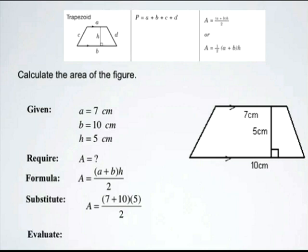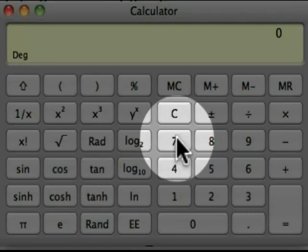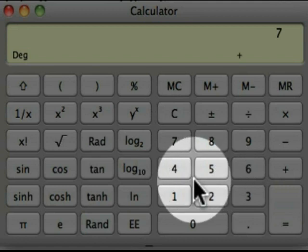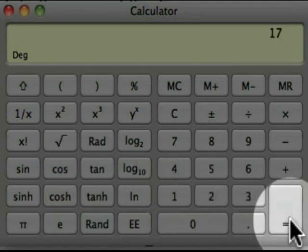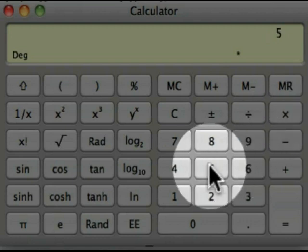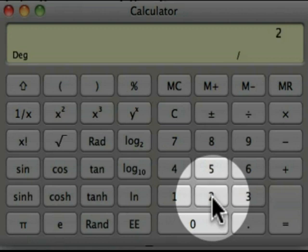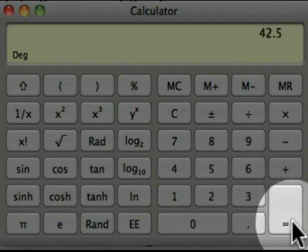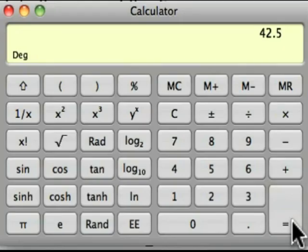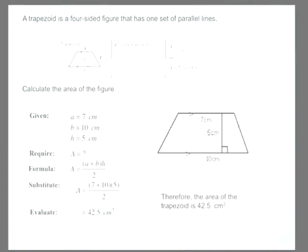Let's evaluate using our calculator. Following the rules of BEDMAS, we'll first calculate 7 plus 10 because that's in the brackets. So 7 plus 10, we should be able to do this without the calculator, but here we are. 17 multiplied by 5 equals 85, and divide all that by 2 will give you your area of 42.5. Therefore, the area of the trapezoid is 42.5 centimeters squared.